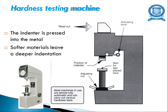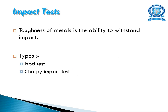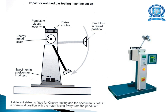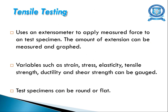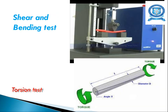This is the hardness testing machine, which you would have studied in a previous semester. In impact testing, the toughness of the metal is detected — the ability to withstand impact. There are two types: Izod test and Charpy impact test. Tensile testing uses an extensometer to apply a measured force to a test specimen, and variables such as stress, strain, elasticity, tensile strength, ductility, and shear strength can be gauged. The shape of the test specimens may be round or flat. Also shown is the shear and bending test machine.